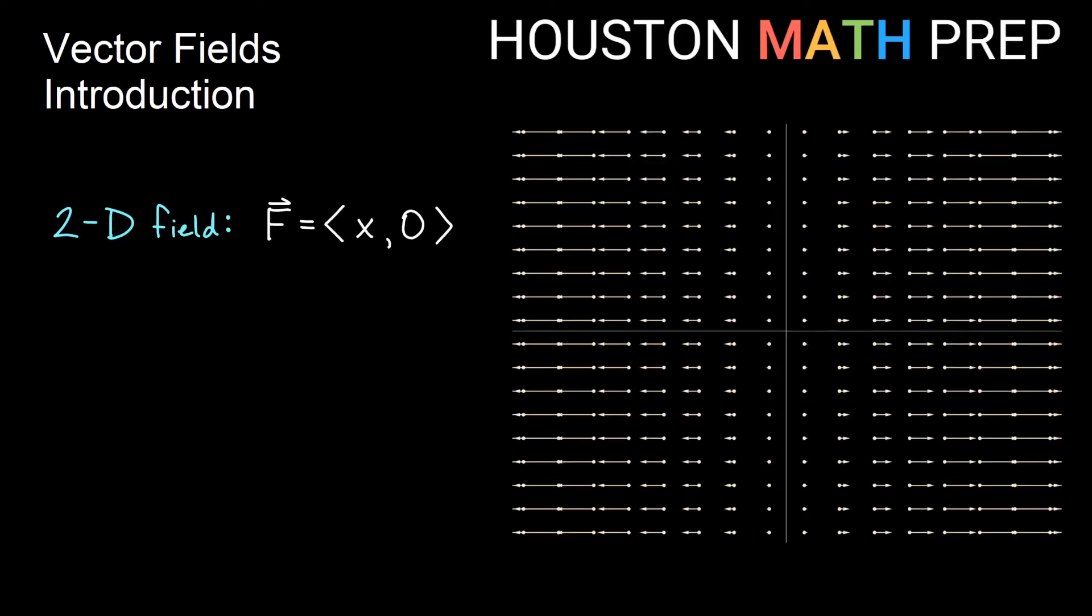Here's another 2D field. This one is neither rotational nor radial. We have vectors that are actually pointing only in horizontal directions. The formula for this vector field is <x, 0>. So you can see that our vertical component for each vector is 0, so we only have horizontal force going on here.